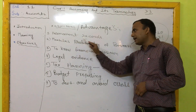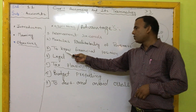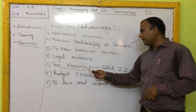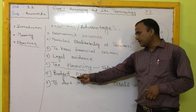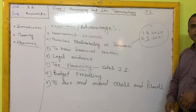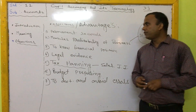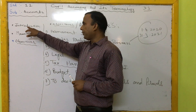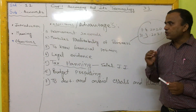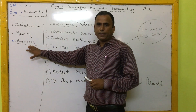So these are all the objectives of accounting: permanent record, measuring profitability, knowing the financial position, legal evidence, tax planning, preparing a budget, and detecting and avoiding errors and frauds. Some objectives also serve as advantages. Today we completed the introduction, meaning, and objectives of accounting. Every student should write the meaning and objectives of accounting in their notes at least once.